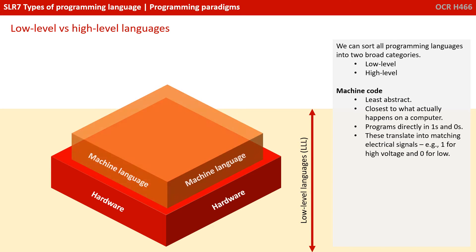We can sort all languages into two broad categories: low-level and high-level. Let's first look at low-level, and the lowest form of language known as machine code. This is the least abstracted — it's the closest to what actually happens on a computer. Programs in machine code are directly written in binary 1s and 0s, which translate into matching electrical signals, for example a 1 for a high voltage or 0 for a low.